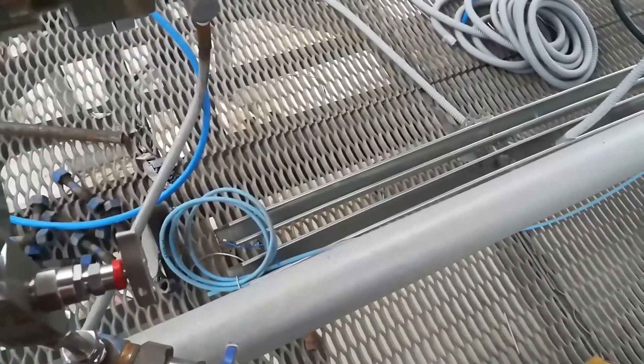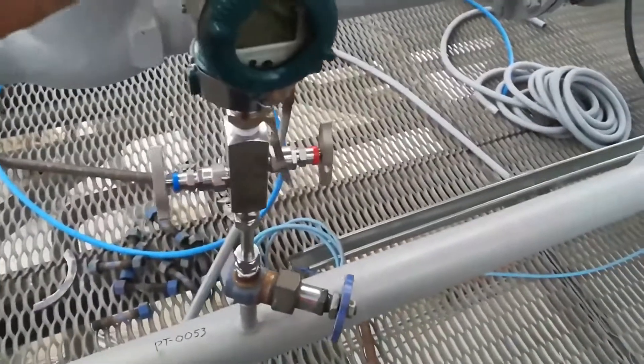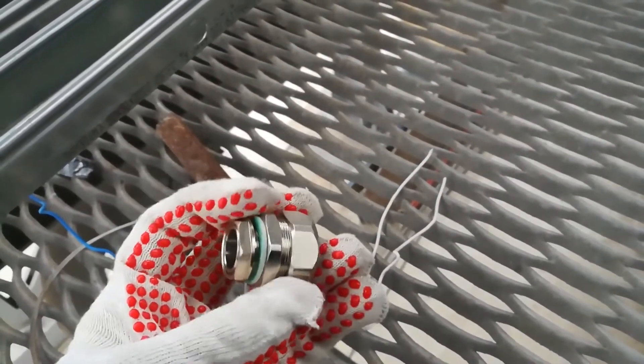A strong armored shielded cable with a cross section of one square millimeter will come from that tray over there. Here I have already drilled a hole with a special crown with a diameter of 20 millimeters, and the cable will pass through this coupling.